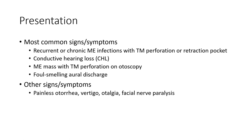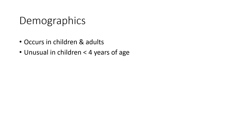Most common signs and symptoms include recurrent chronic middle ear infection with tympanic membrane perforation or retraction pocket, conductive hearing loss, middle ear mass seen on otoscopy, and foul-smelling ear discharge. Other serious symptoms include facial nerve paralysis and vertigo. Cholesteatoma can also occur in children, usually those less than 4 years of age.